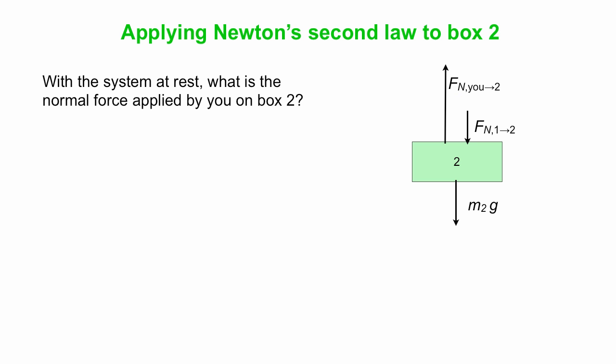What about box number two? Similar thing. Sum of all the forces applied to box two is the mass of two times its acceleration. Again we'll choose up to be positive, and again the acceleration is zero. Anything going up is positive, we only have one positive force, normal force applied by you on two. The other normal force, Fn one on two is down, it goes in the equation with a minus sign. M2g is down, it goes in with a minus sign.